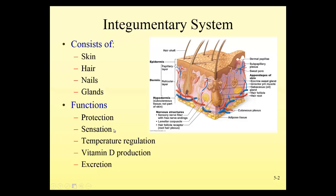Sensation: we have sensory receptors that receive information from the outside and send that to the brain for processing to see if a response is required. We talked about that with negative feedback loops. There are temperature receptors in the skin and there are pressure and touch receptors in the skin as well, that help to determine if a response is needed to maintain homeostasis.